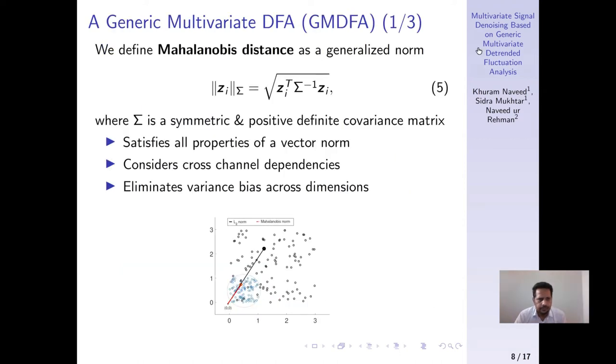To address this issue, we define Mahalanobis distance as a generalized vector norm given in equation 5, because it not only satisfies all the properties of a vector norm, but it also considers the cross-channel dependencies and eliminates the variance bias across the dimensions.